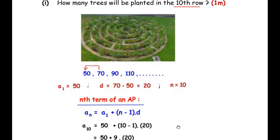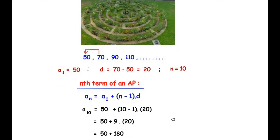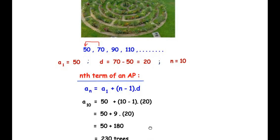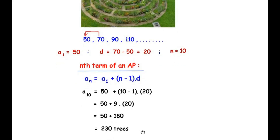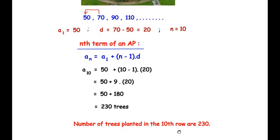Substituting the values: a10 = 50 + (10 − 1) × 20 = 50 + 9 × 20 = 50 + 180 = 230. So the number of trees planted in the 10th row is 230.